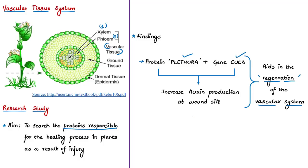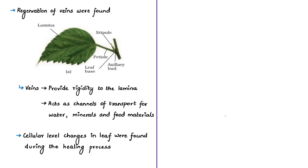It was found that this protein and gene together increase the production of plant growth hormone called auxin at the wound site. This combination of plethora and CUC2 helps the plant in repairing wounds — this is the crux of the research. One more interesting finding: the plethora protein did not play any role in the general development of the vascular system, but functions only during injury.